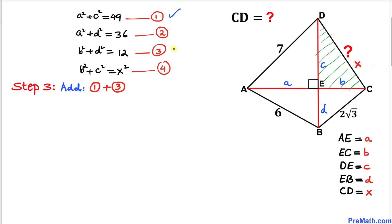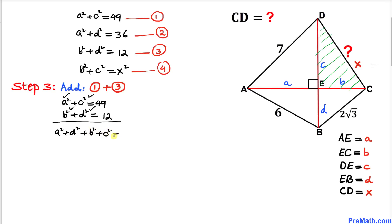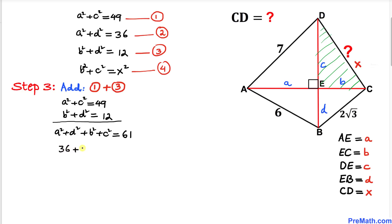Now let's add equations one and three together. Adding them gives: (a² + c²) + (b² + d²) = 49 + 12 = 61. We know from equation two that a² + d² = 36, so we replace that, and from equation four b² + c² = x². This gives us 36 + x² = 61. Subtracting 36 from both sides, we get x² = 25. Taking the square root of both sides gives x = ±5.